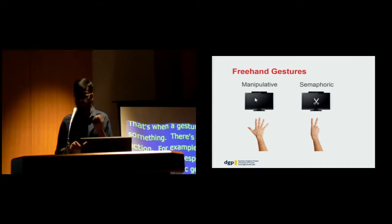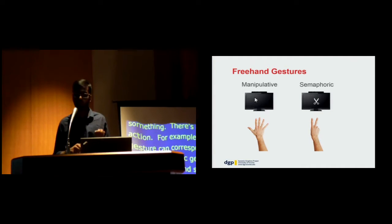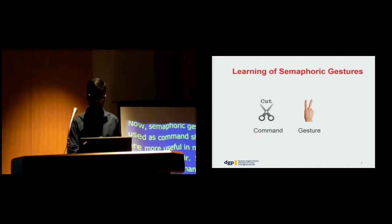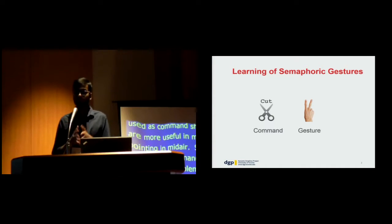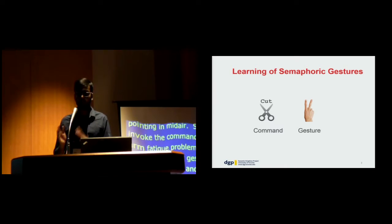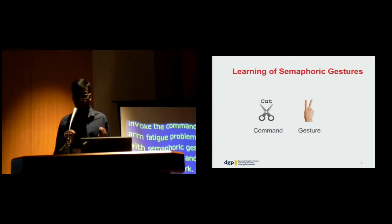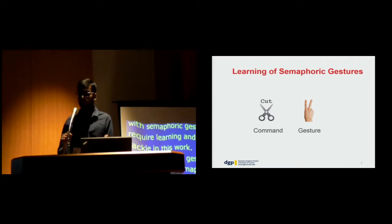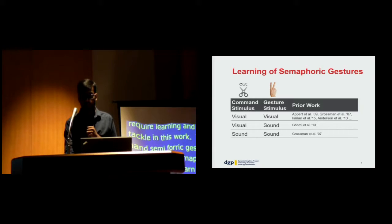But the problem with semaphoric gestures is that they require learning, and that is what we tackle in this work: the learning of freehand semaphoric gestures. For semaphoric learning, the user needs to learn the association between a command and a gesture. For example, for learning a set of gestures, a user sees the stimulus for the command as an icon and then sees the stimulus for the associated gesture as another image.